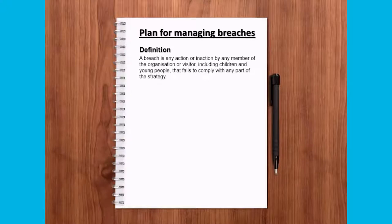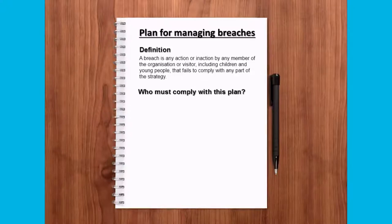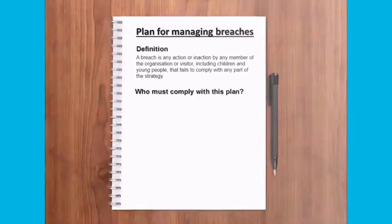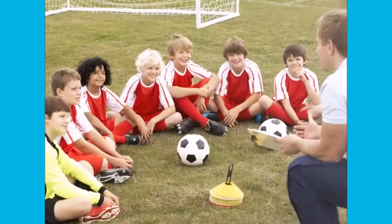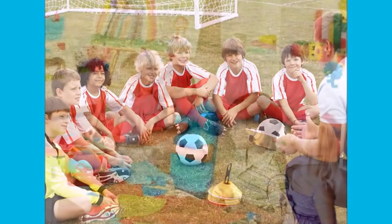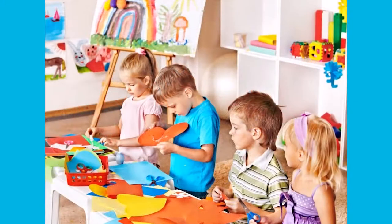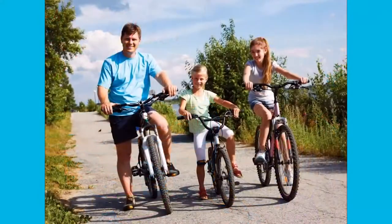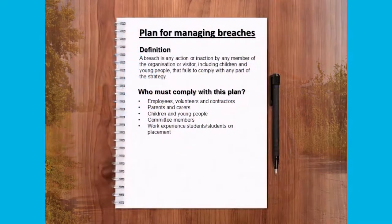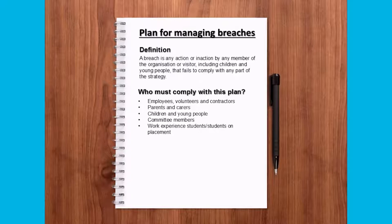You must also clearly outline who must comply with the plan. It is important to remember, as discussed in the code of conduct video, that your risk management strategy will not likely just apply to your employees and volunteers. It should apply to everybody involved with your organization, including children, parents, contractors, and all other relevant people.